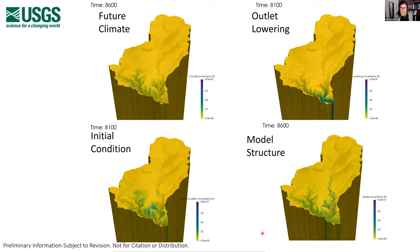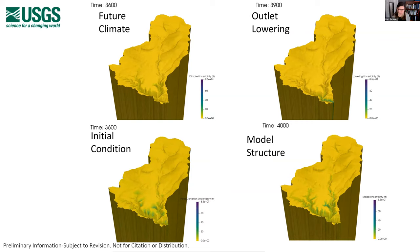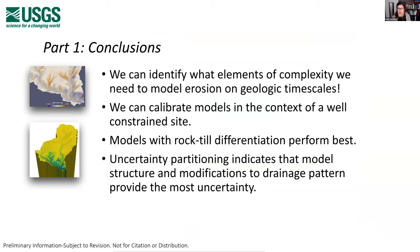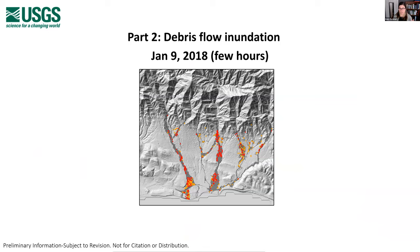One fascinating open question is: what sort of field data could we use to differentiate between these models and reduce model structure uncertainty? To conclude this section: this formal model analysis approach can provide insight into the complexity needed to capture the dynamics of a particular place, and the multi-model approach with a fully balanced experimental design can help constrain the proportions of uncertainty attributable to different alternative scenarios. Now let's discuss the second case study of debris flow inundation, focusing on the January 9th, 2018 Montecito debris flow event.